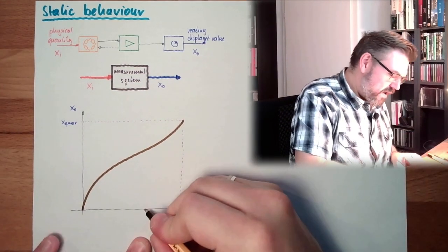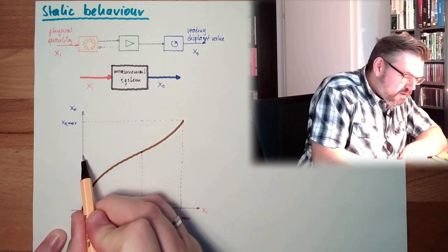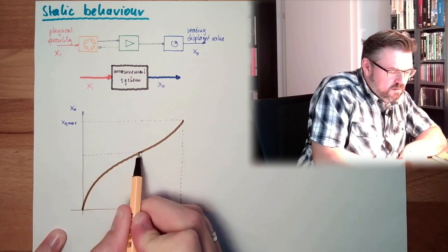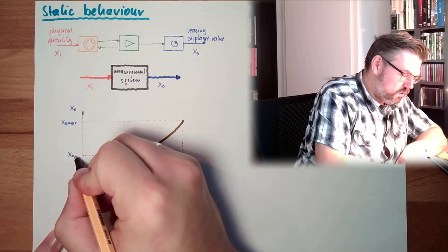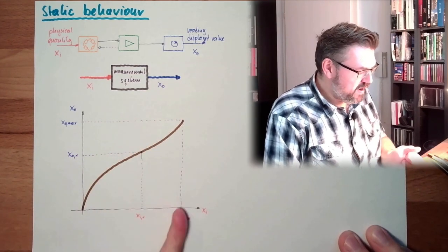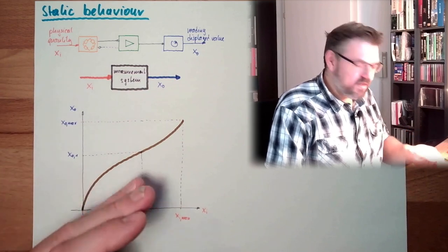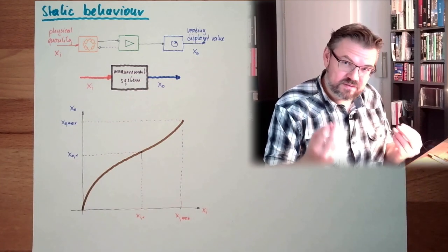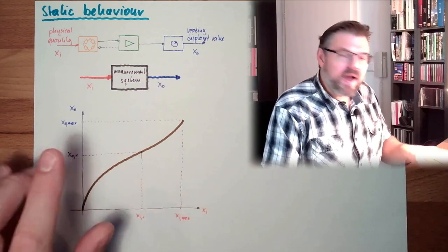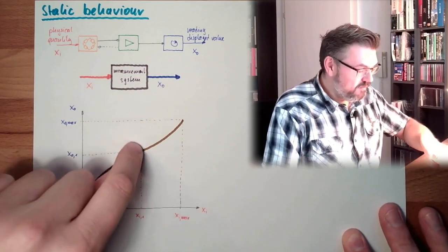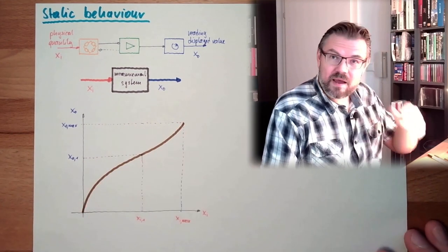The maximum thing I can measure with my device, and this is the maximum thing I can display. It would be ideal if those two things fit together. How they map to each other is described by a curve — if I have input value XI1, I will read output XO1. For every XI, exactly one XO is mapped, and for every XO exactly one XI — this is absolutely necessary. The curve must be bi-unique, meaning it must increase all the time.